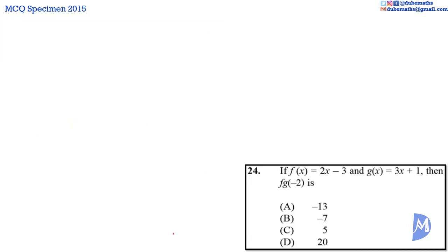Question 24. We are asked to find f(g(-2)). f(g(-2)) is the same as f of the result of g(-2), so let's work out g(-2).